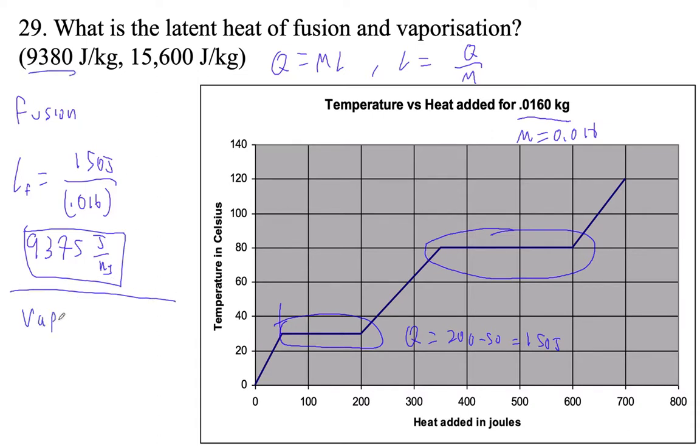So vaporization. Latent heat is going to be - how much heat flows in? Well, this is 100, 200, 250. So Q for this is going to be 600 minus 350. That's 250.